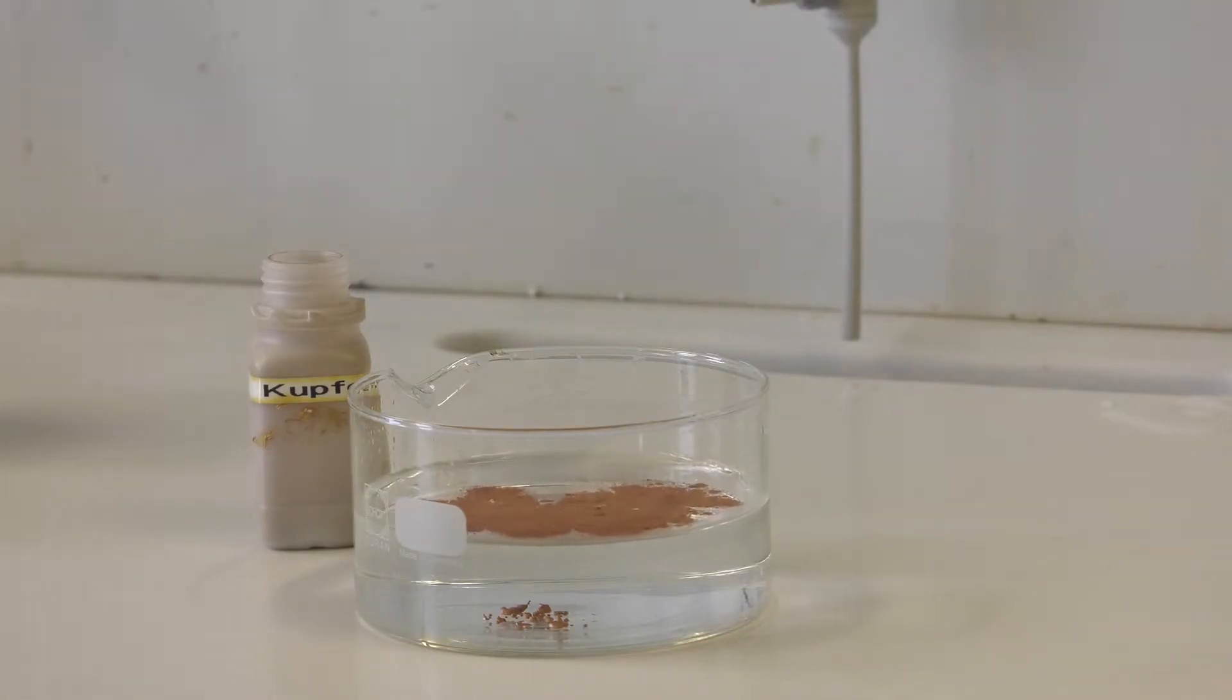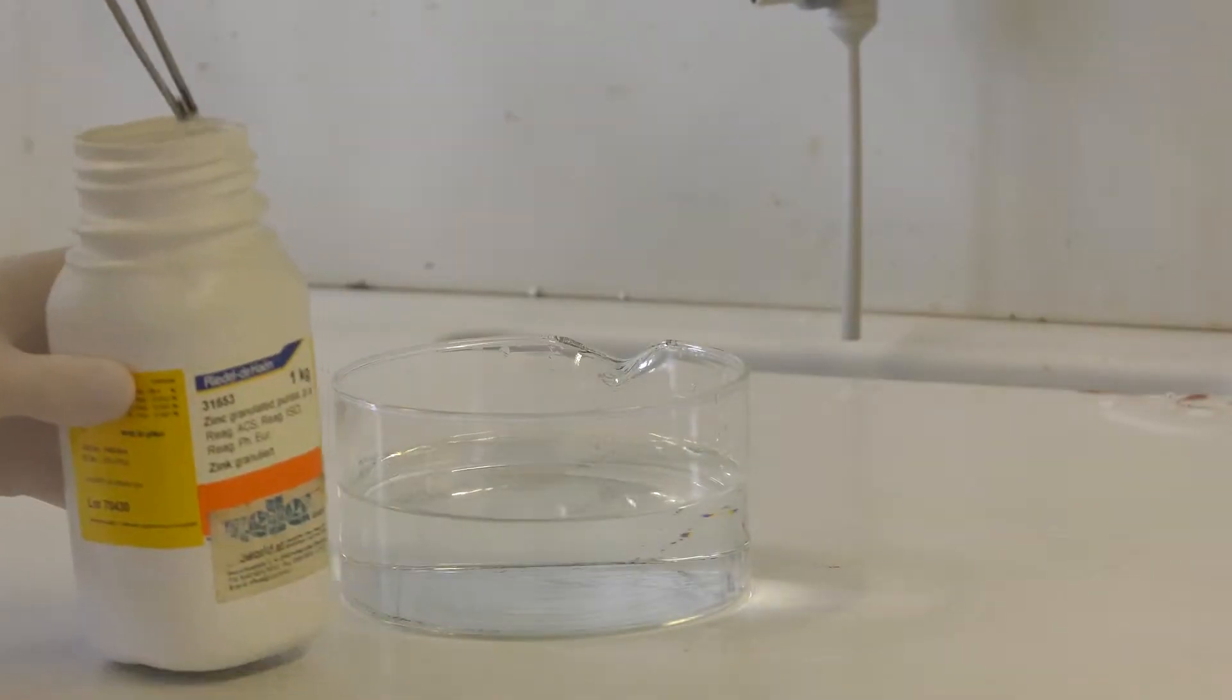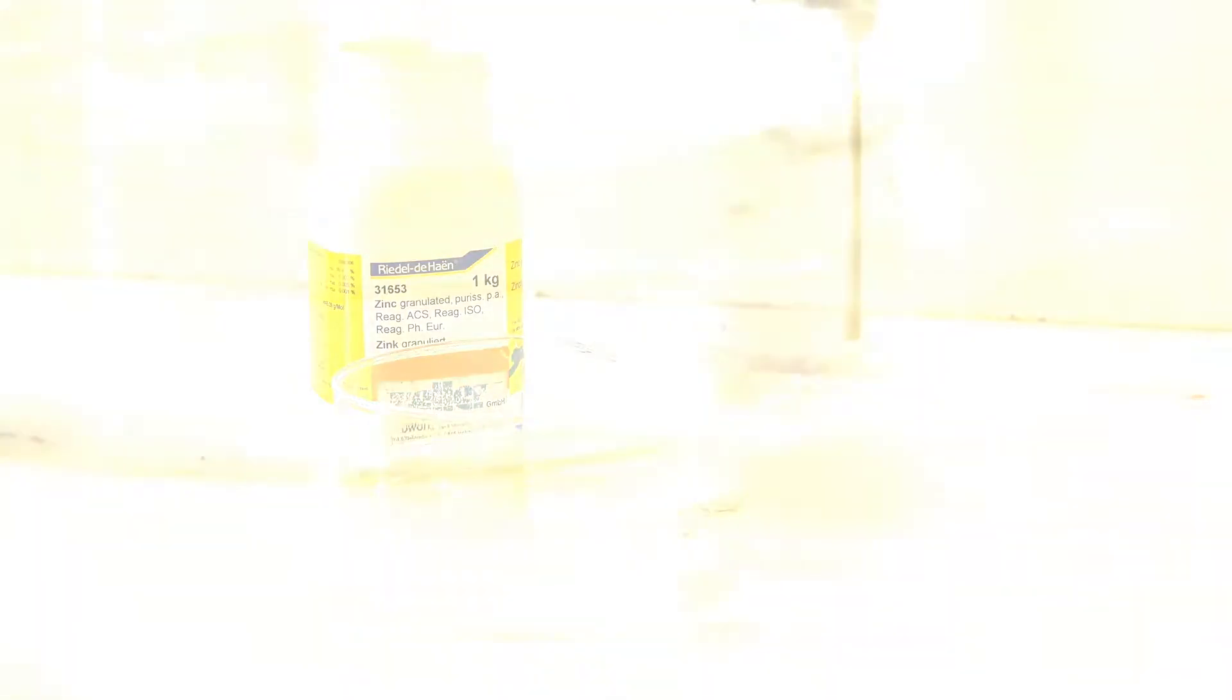Once you have done that, take a small amount of zinc and add it into the bowl. Again, there will be no chemical reaction visible.